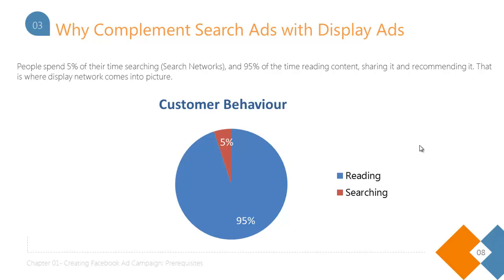You should complement your search ads with display ads. Research shows that people spend 5% of their time searching on search networks and 95% of their time reading content, sharing it, and recommending it. That is where your display network comes into picture. When someone is searching using a keyword specific to what you're selling, you can target them using search ads. But what about the 95% of the time when they're just consuming content? This is where your display ads will come in.